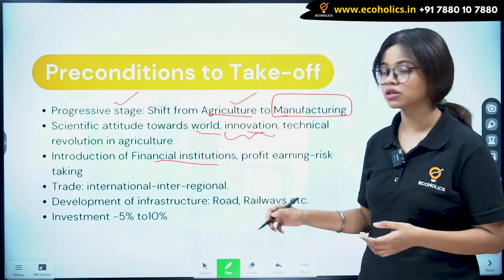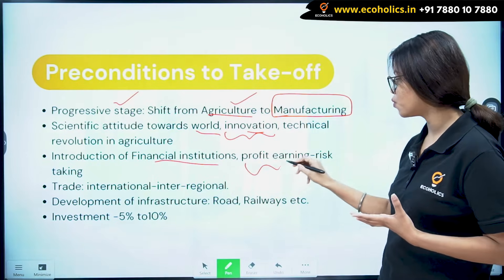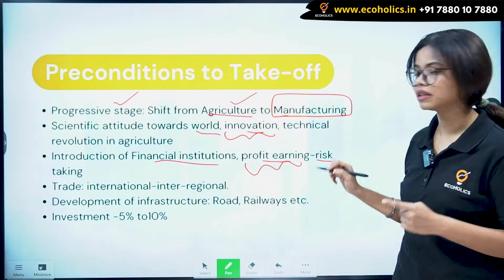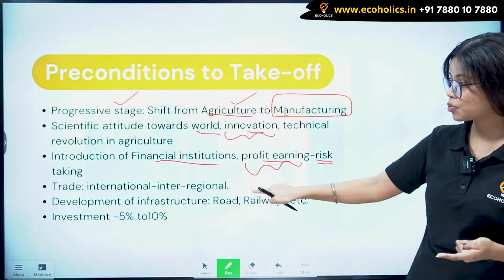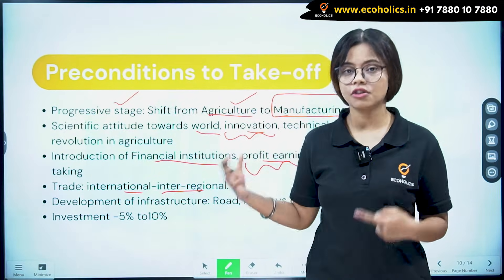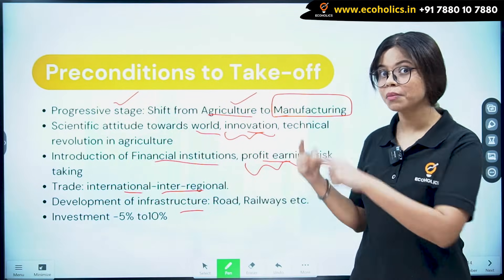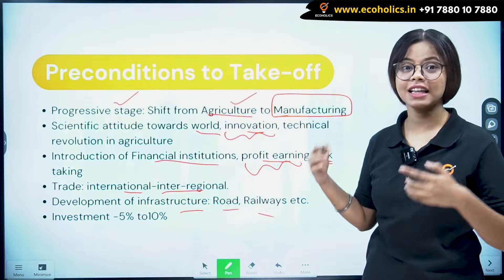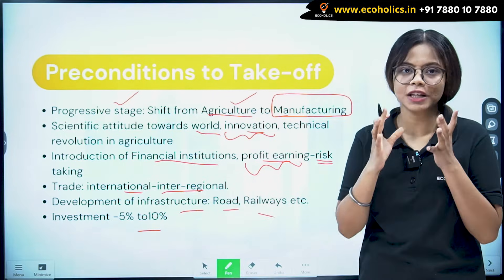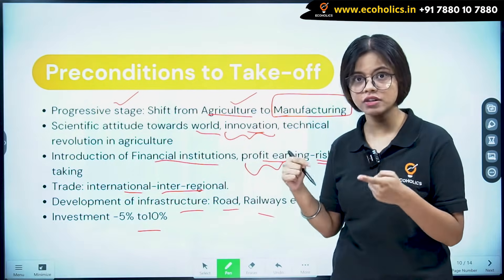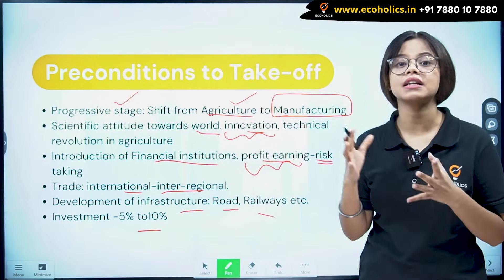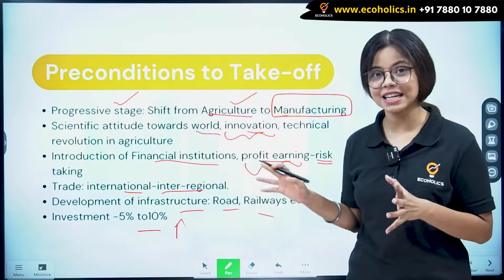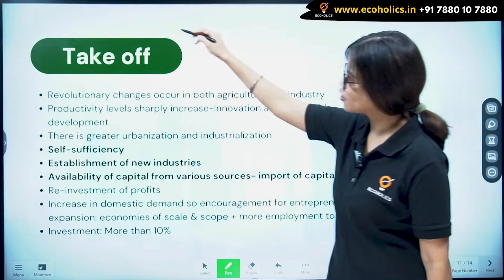People now have technical know-how and there is introduction of financial institutions. People want to earn profit and they are risk takers. Trade is both international and inter-regional. There is development of infrastructure — unlike the Traditional Society where there was none, roads and railways are now being introduced. Investment has also risen to between five and ten percent, up from less than five percent in the previous stage.